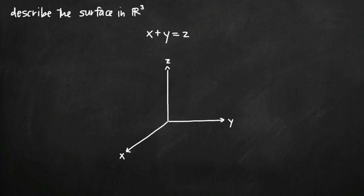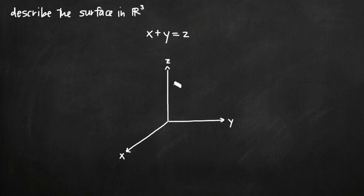Today we're going to be talking about how to describe a surface in three-dimensional coordinate space. We represent three-dimensional coordinate space with the R-cubed symbol. It means we're dealing with three-dimensional coordinate space where we have three variables and three coordinate axes: x, y, and z.